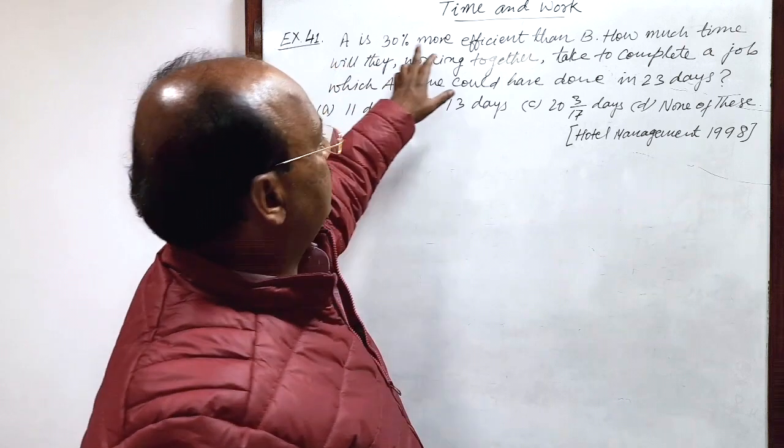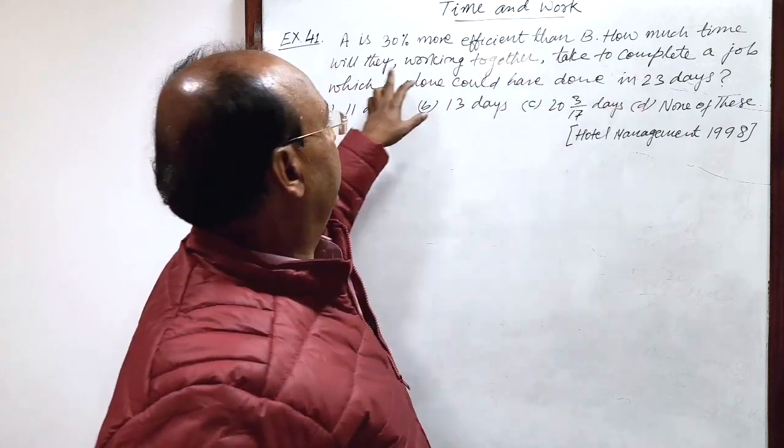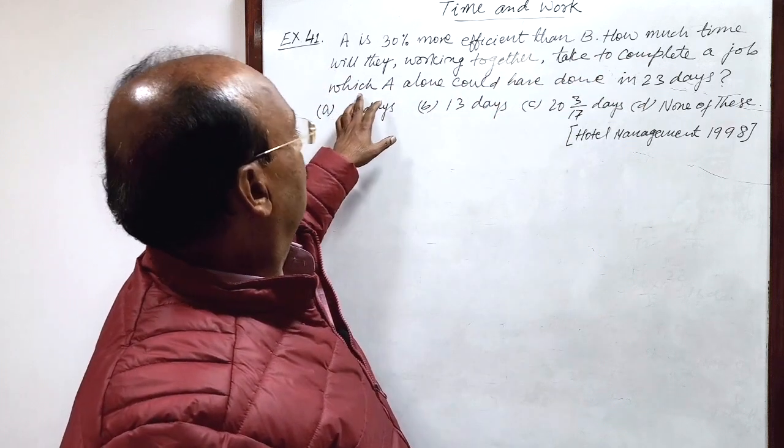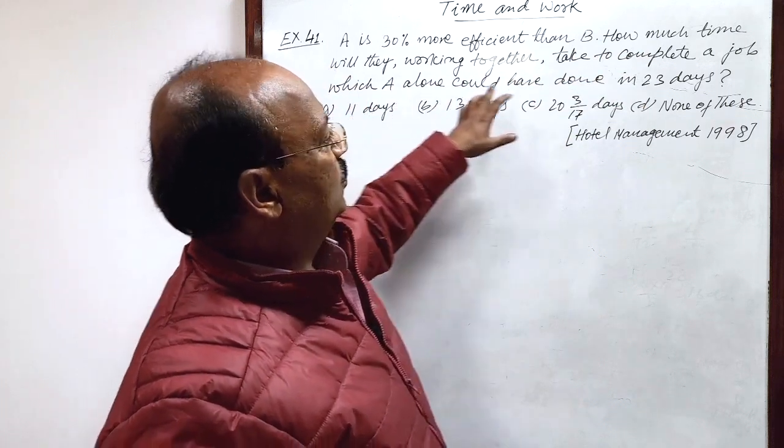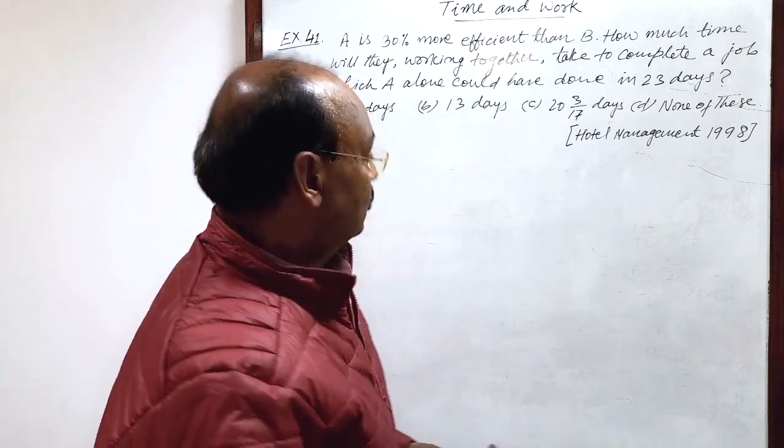Here the question is: A is 30% more efficient than B. How much time will they working together take to complete a job which A alone could have done in 23 days? Let us see the solution here.